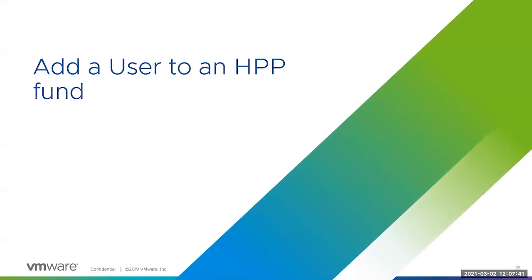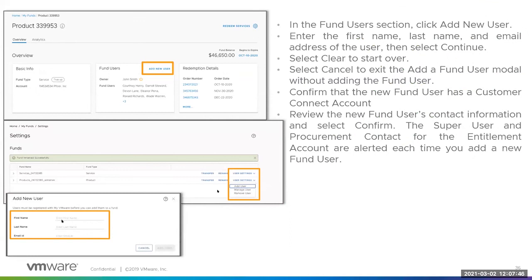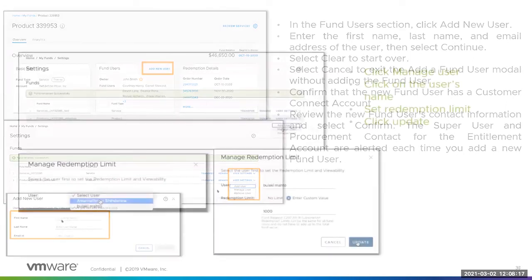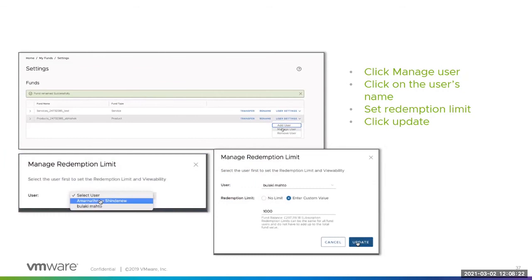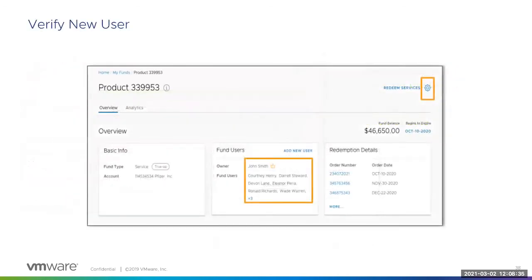Now let's walk through the process of adding a user to an HPP fund. In the Fund User section, click Add New User. Enter the first name, last name, and email address of the user, then select Continue. Select Clear to start over, or Cancel to exit the Add a User modal without adding the fund user. Confirm that the new fund user has a Customer Connect account, review their contact information, and select Confirm. The super user and procurement contact for the entitlement account are alerted each time you add a new fund user. You can change the user redemption limit by deselecting the No Limit checkbox. Specifying a redemption limit allows fund owners to limit how much fund users can redeem for new products, services, and/or add-ons to existing services. On the Fund Details page, you will see the new user's name in the Fund Users field. To manage limits or add additional users, access the Settings page via the gear icon.